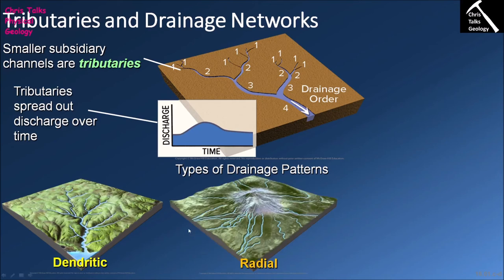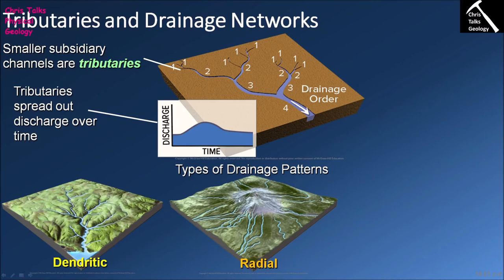The next type is a radial drainage pattern, typically associated with an isolated area of elevated terrain — the most common example being a volcano. Water deposited on the elevated terrain, whether as liquid water or snow and ice forming glaciers, will flow down the sides as it melts or runs off the surface. This creates multiple rivers forming at the elevated terrain and flowing away from it, with rivers radiating away from the central high like spokes in a cartwheel.